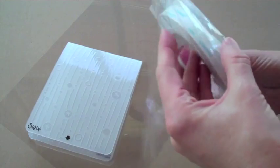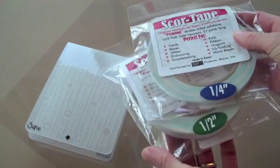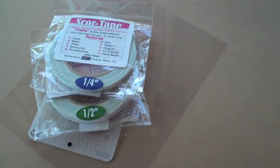Your embossing folder, two different sizes of double sided tape. I like score tape. I'm using the quarter and a half inch sizes.